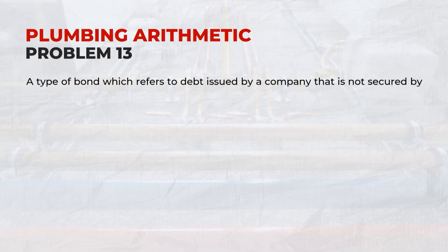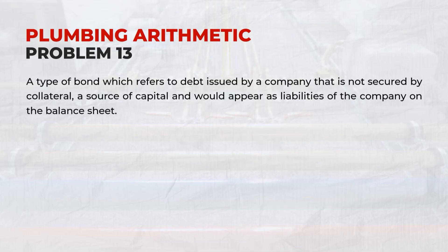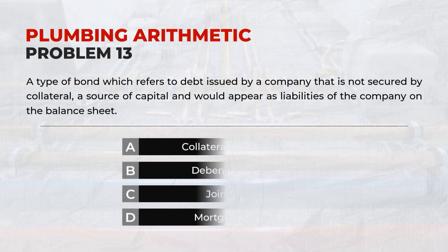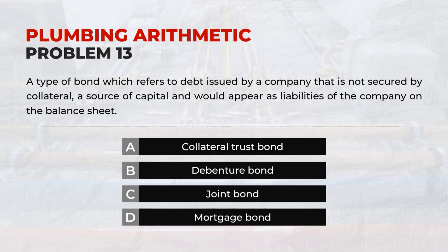A type of bond which refers to debt issued by a company that is not secured by collateral, is a source of capital, and would appear as liabilities of the company on the balance sheet. Answer: B. Debenture bond.